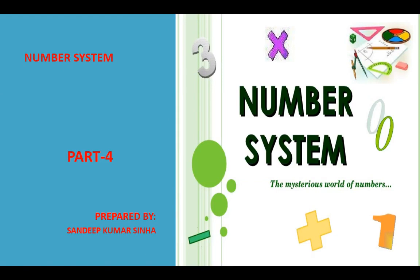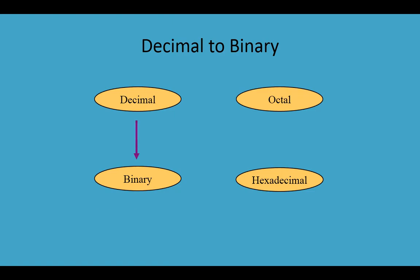Hello students, I hope you are doing well in your studies. In this video on number system part 4, we are going to learn the conversion of decimal to binary. So far we have studied conversion from binary to decimal, octal to decimal, and hexadecimal to decimal. Now in this video we will learn about conversion from decimal to binary. As you know, decimal has 10 digits — 0 to 9 — and binary has only two digits.